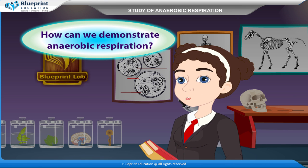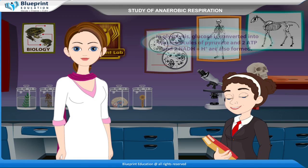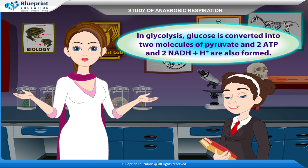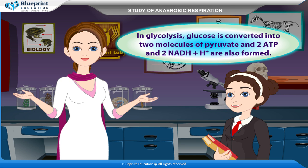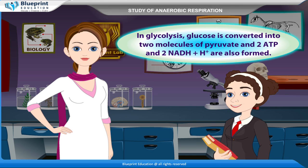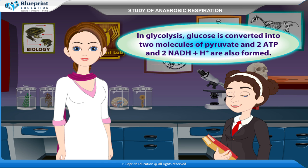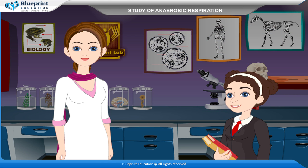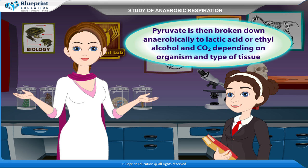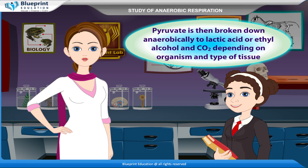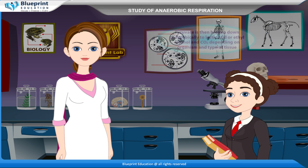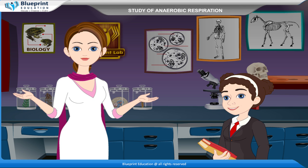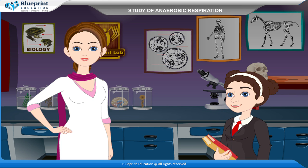How can we demonstrate anaerobic respiration? In glycolysis, glucose is converted into two molecules of pyruvate, and two ATP and two NADH+ H+ are also formed. Pyruvate is then broken down anaerobically to lactic acid or ethyl alcohol and CO2, depending on the organism and type of tissue. Let's do an experiment to demonstrate anaerobic respiration.